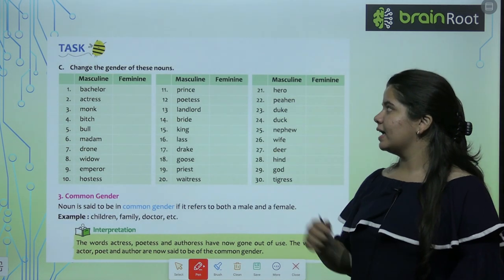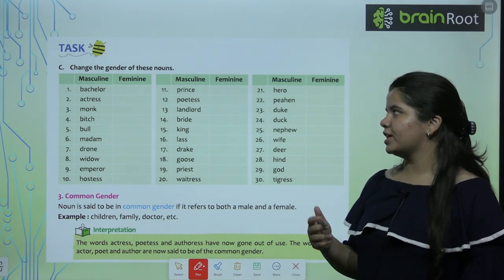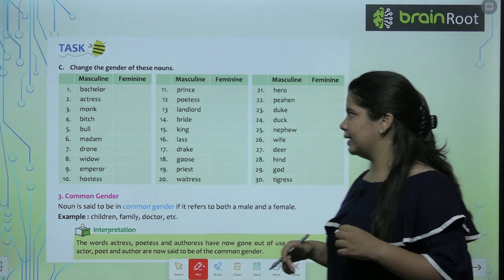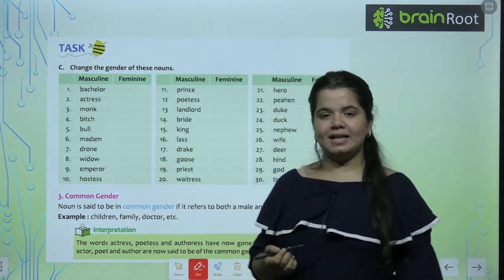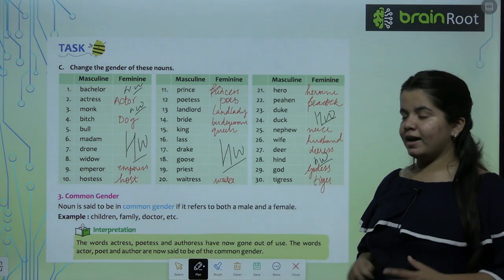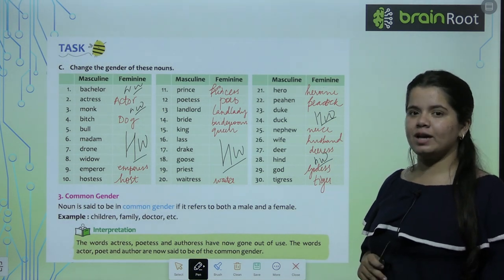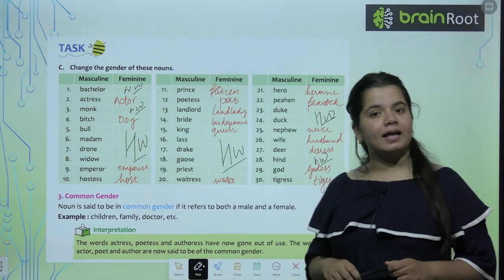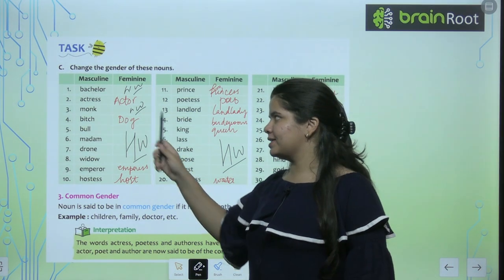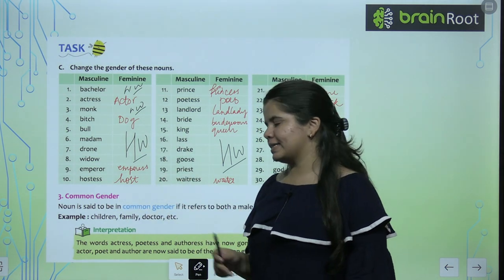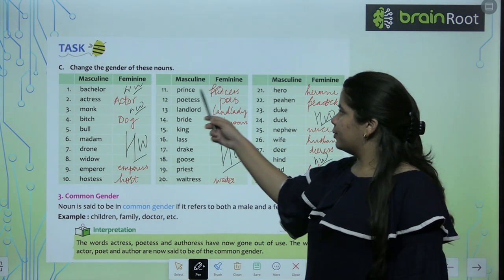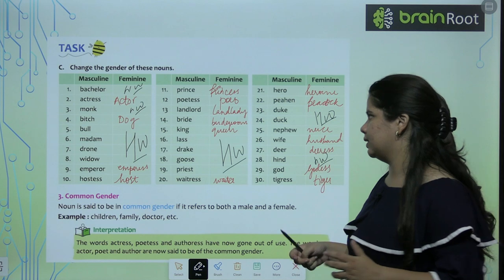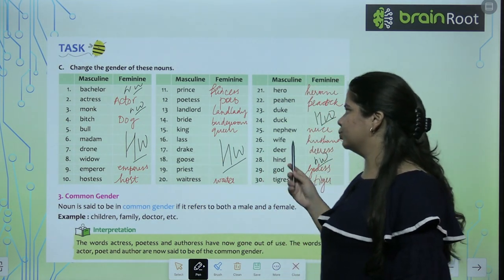So now we have exercise C. In this you have to change the gender of the nouns — aapko gender change karna hai. Kuch mein aapko masculine se feminine karna hai and kuch mein feminine se masculine karna hai. Some of them I will give you as your homework and some you have to do with me. Actress, actor. Bitch, dog. Emperor, empress. Hostess, host. Prince, princess. Poetess, poet. Landlord, landlady. Bride, bridegroom. King, queen. Next four are your homework: waitress/waiter, hero/heroine, peahen/peacock, nephew/niece, wife/husband, dear/dearest, god/goddess, tigress/tiger.